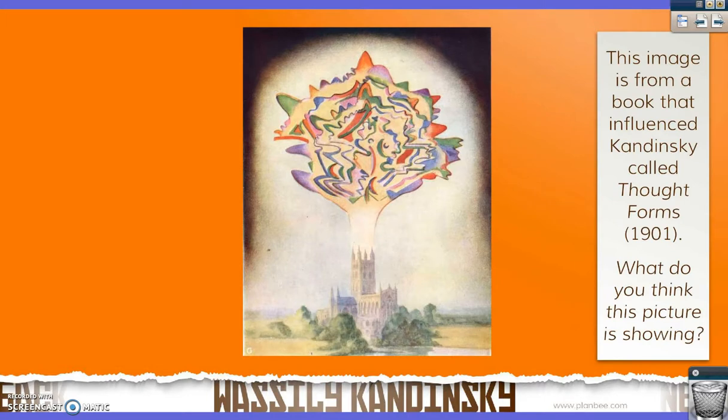While he was travelling, studying and painting, Kandinsky began to develop ideas about the ways in which music and painting were related. He and many other artists thought the colours and shapes they painted were a bit like language — they could describe ideas and feelings or tell a story. This image on screen is from a book that influenced Kandinsky called Thought Forms. What do you think this picture is actually trying to show us? Have a look very closely at it. What images and aspects can you see, and what message do you think the painter is trying to tell us? Pause the video and just have a little ponder about that for a few moments.